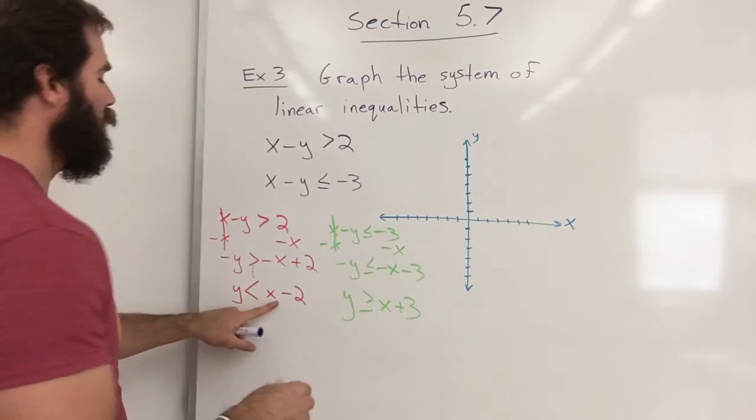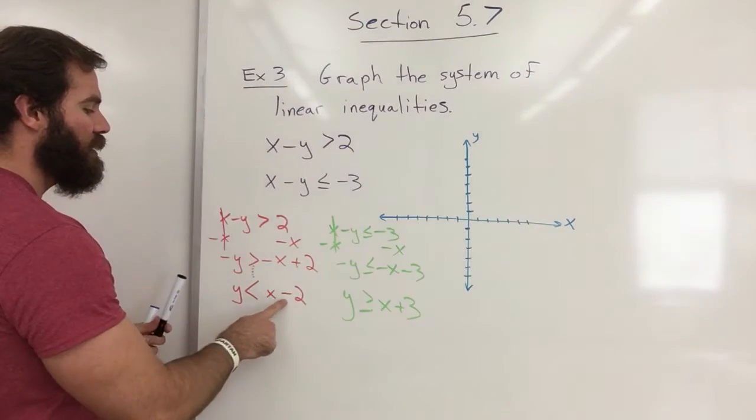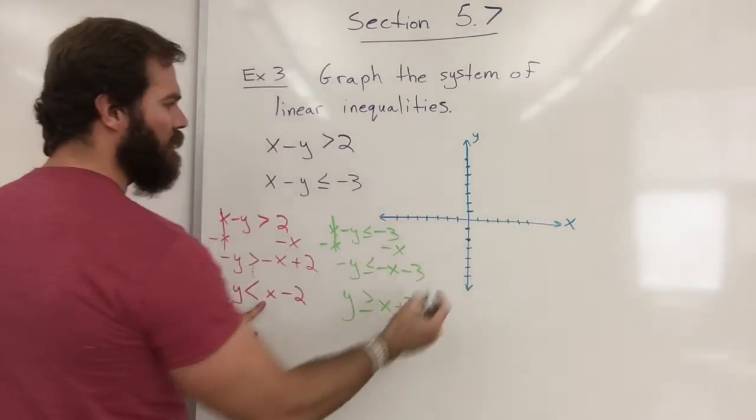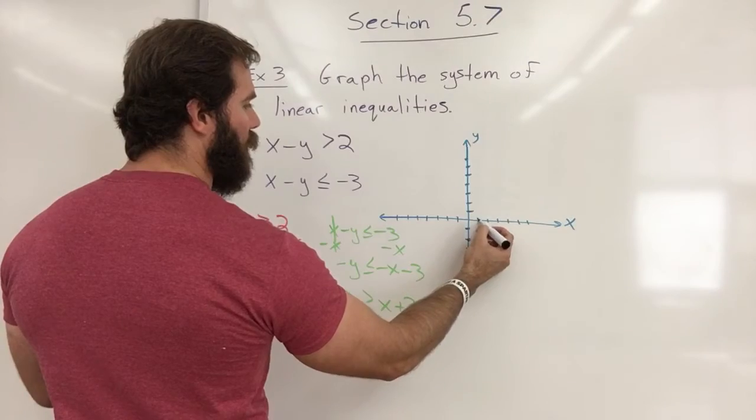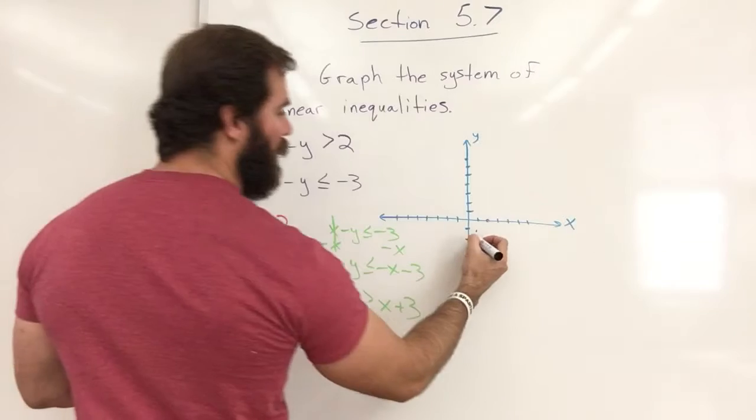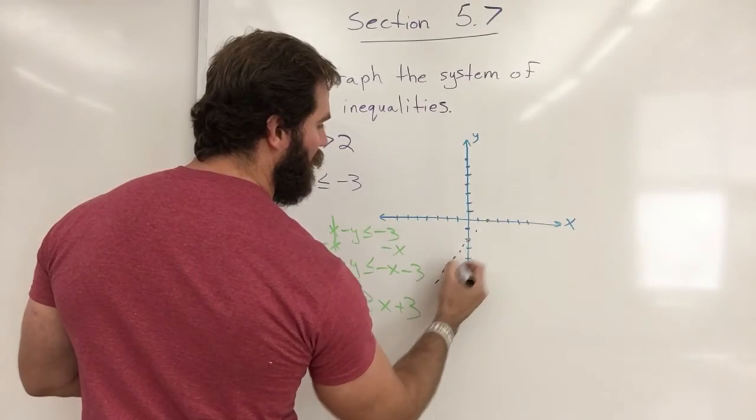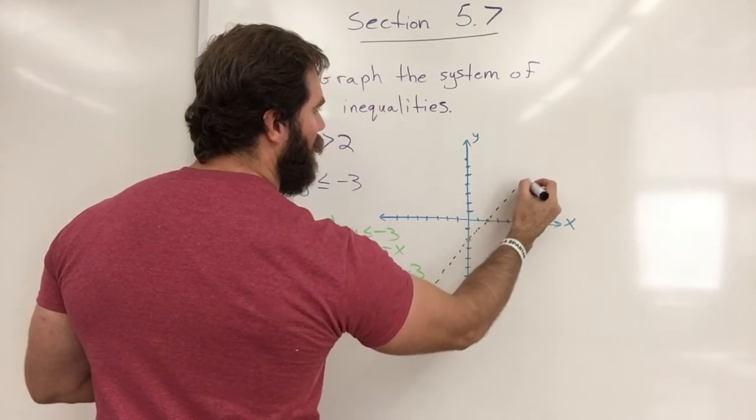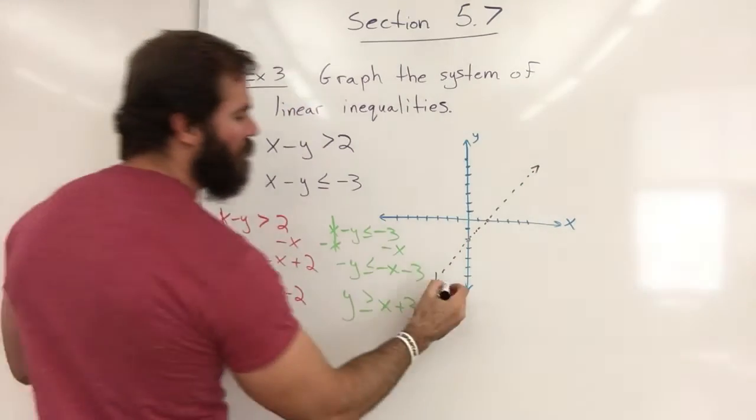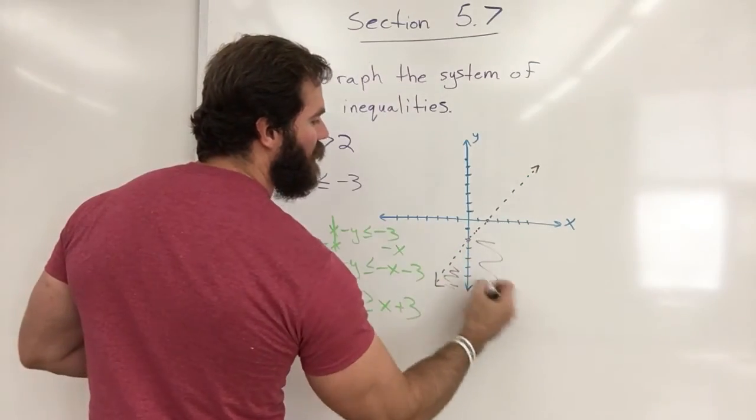Let's graph this first one in black. Our y-intercept is negative 2. The slope is 1 meaning goes up 1 over 1, and it does not say equal to it just says less than so my line is going to be dotted and it's less than so everything below this line is going to be shaded.